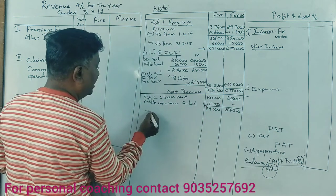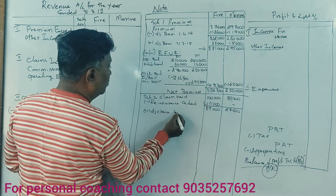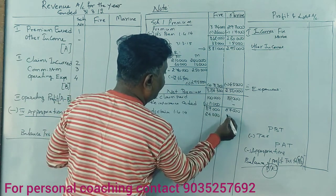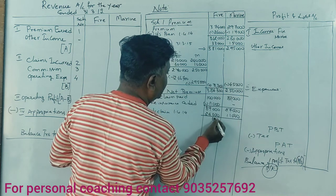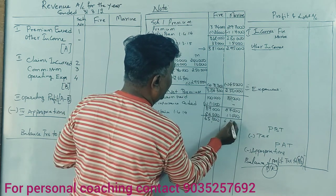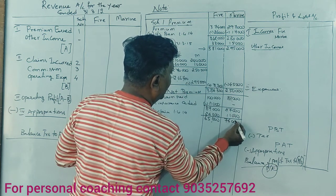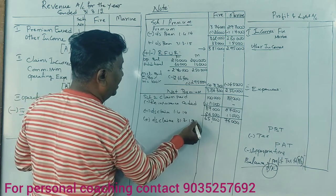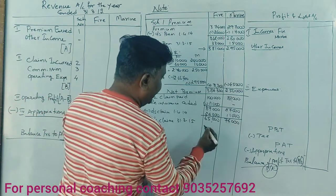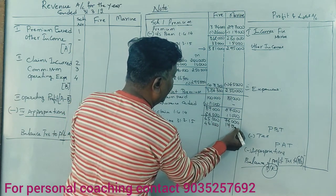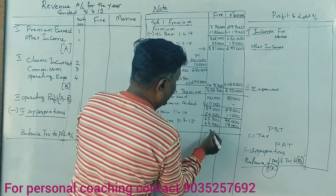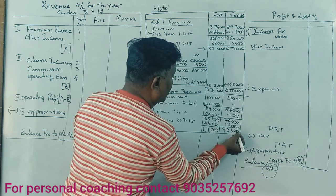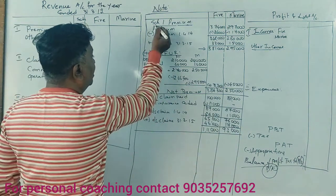Outstanding claims: opening balance ₹87,000; outstanding claims 2014 are ₹14,000 and ₹24,000. The claim recovery of ₹11,000 is applied. Closing outstanding claims as at 31st March 2015: ₹46,000 for fire and ₹70,000 for marine. Net claims come to ₹1,11,000 for fire and ₹93,000 for marine. Schedule Number 2 fire: ₹9,000. Schedule Number 3 follows.